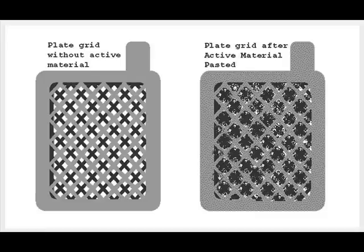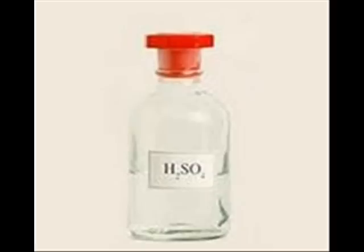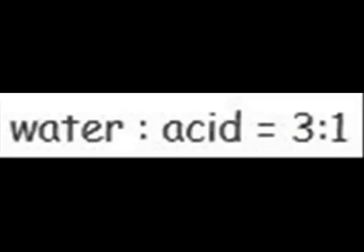The negative plate of lead acid battery is made of pure lead in soft sponge condition. Dilute sulphuric acid used for lead acid battery has a ratio of water to acid equal to three to one.